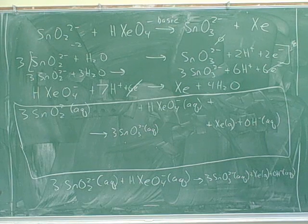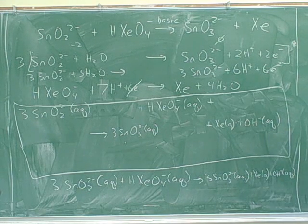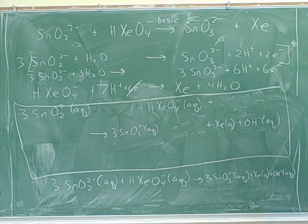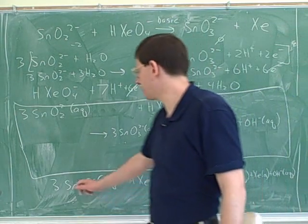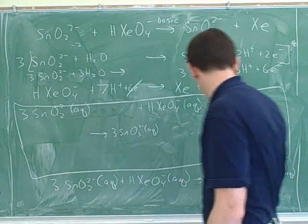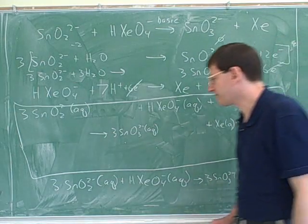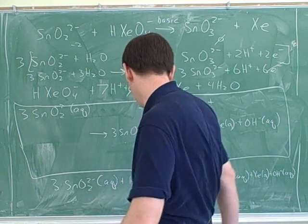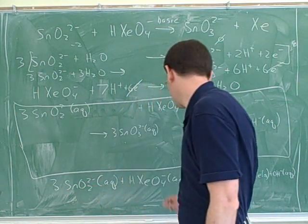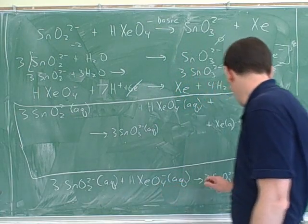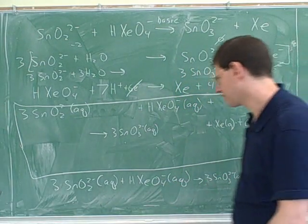And now, if this was a test problem, I would double check. How would you double check this? Do we need the net charge again? Well, first you check, do the tins balance? Well, three tins on the left, three tins on the right. That's correct. Next, I would check, do the oxygens balance. Well, three times two is six, plus four is ten. Three times three is nine, plus one is ten.